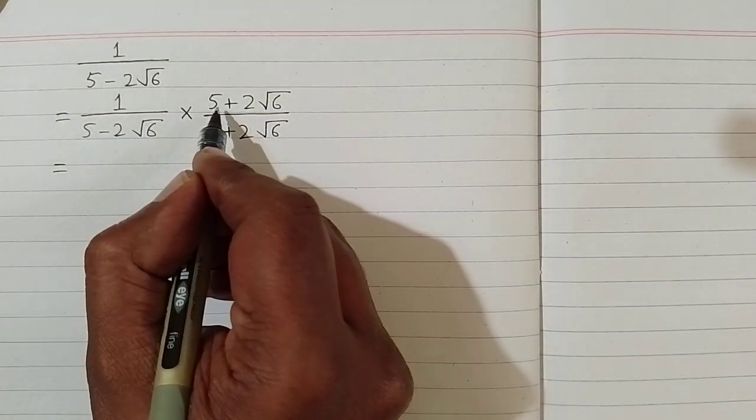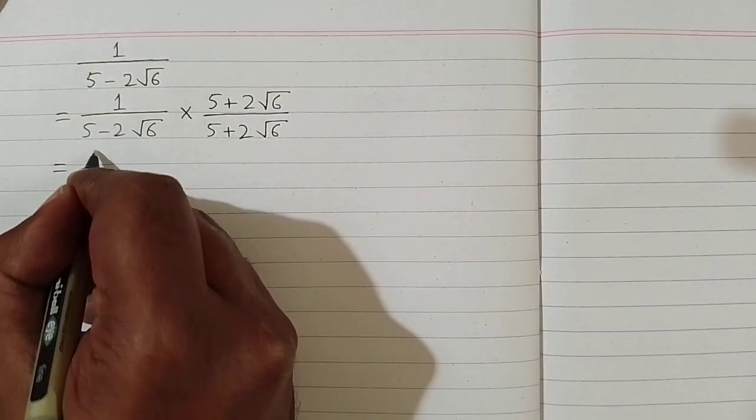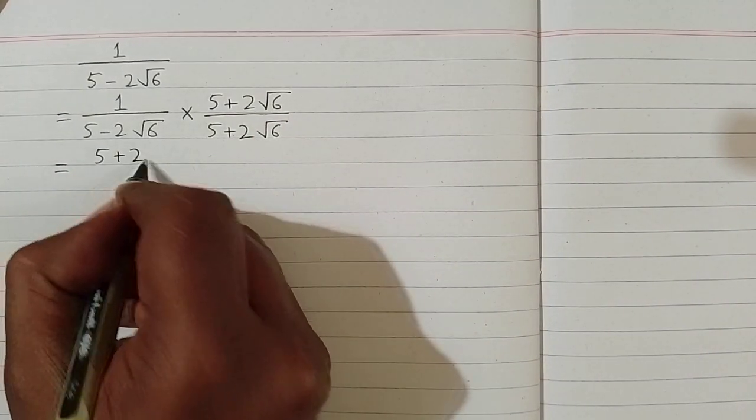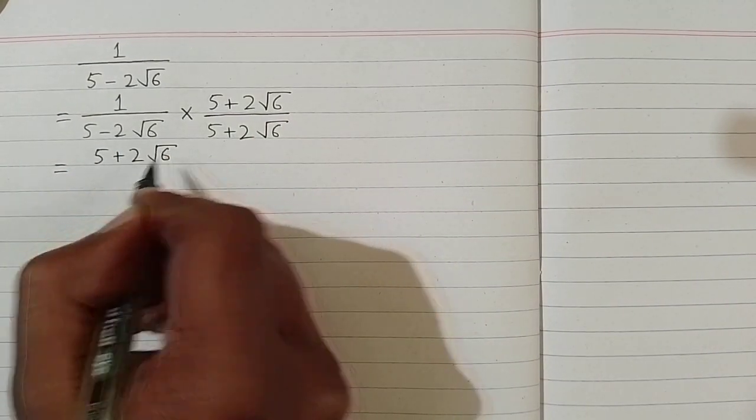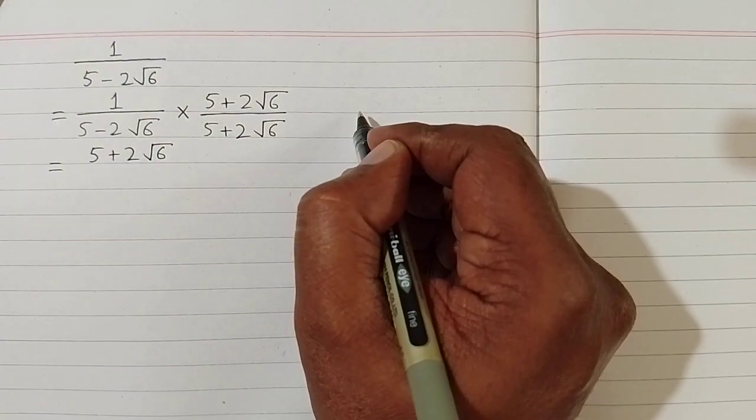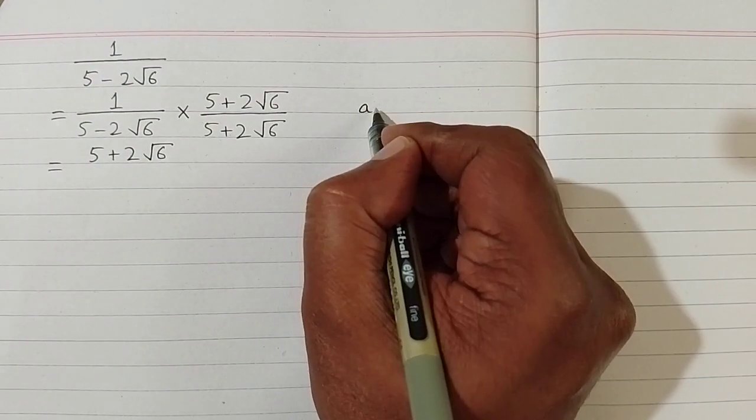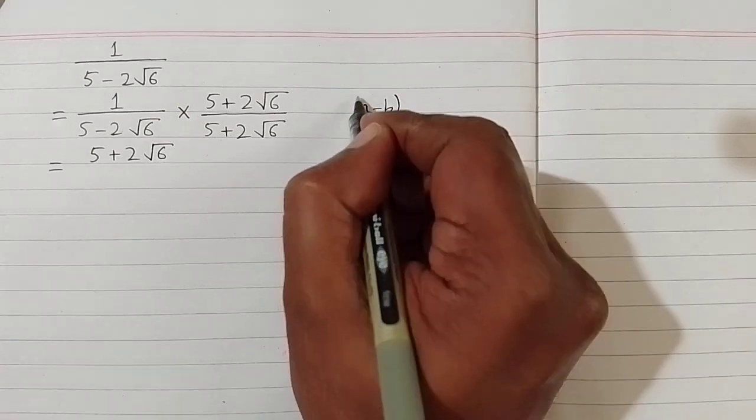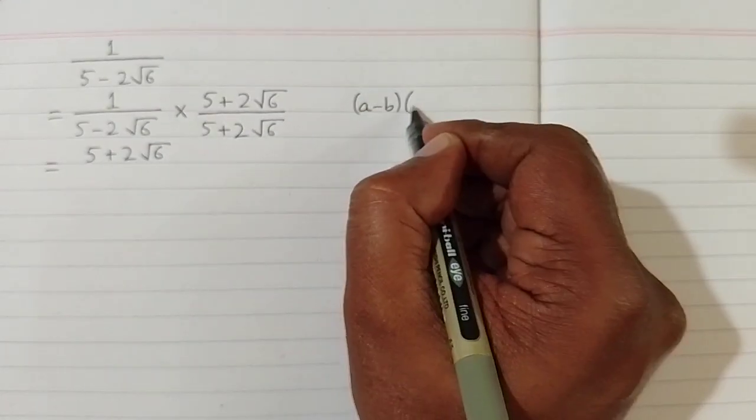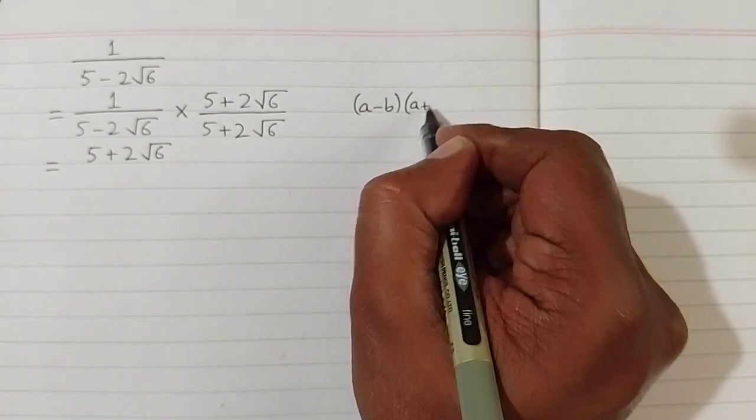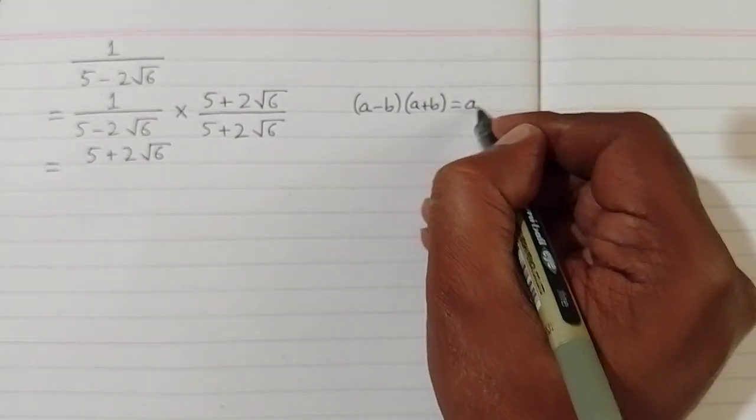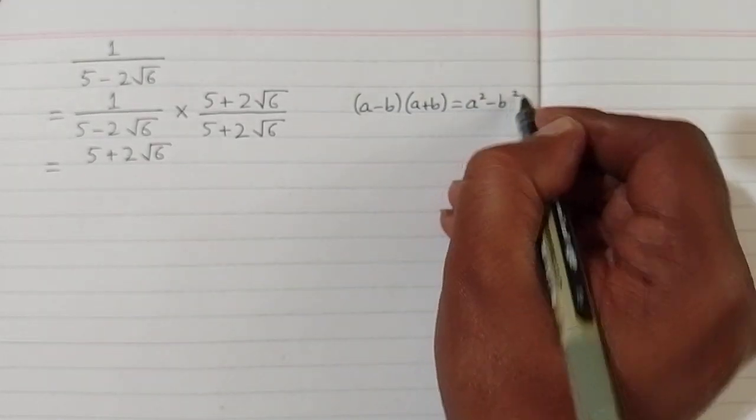Now 1 multiply by 5 plus 2 times square root of 6 is 5 plus 2 times square root of 6. And in the denominator we can apply this algebraic identity which is a minus b multiplied by a plus b is equal to a square minus b square.